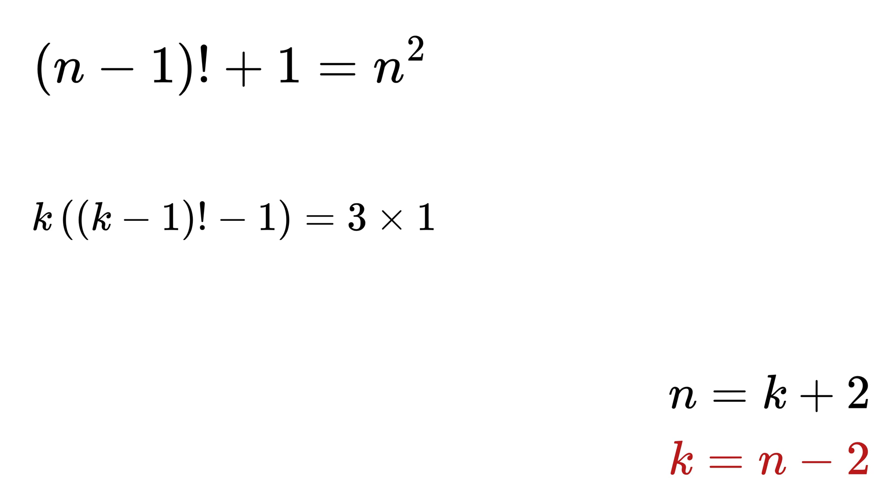Then, the second possibility is that if k equals 3, and k minus 1 factorial minus 1 equals 1. This means k minus 1 factorial equals 2, which is correct, because if k is 3, then k minus 1 factorial equals 2 factorial, which is 2 times 1, or 2, and hence the left side equals right-hand side. So k equals 3.